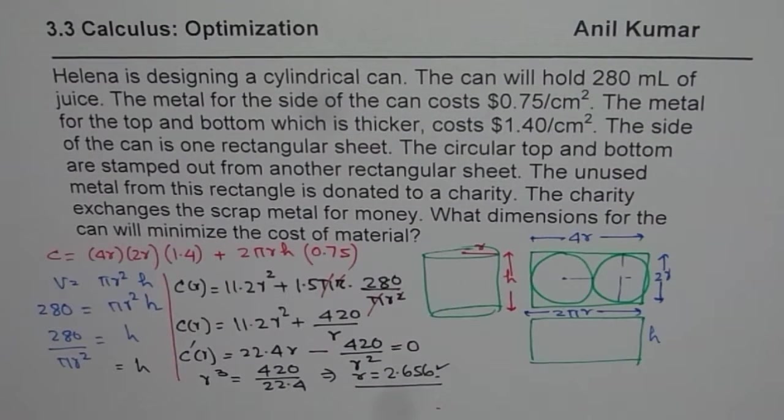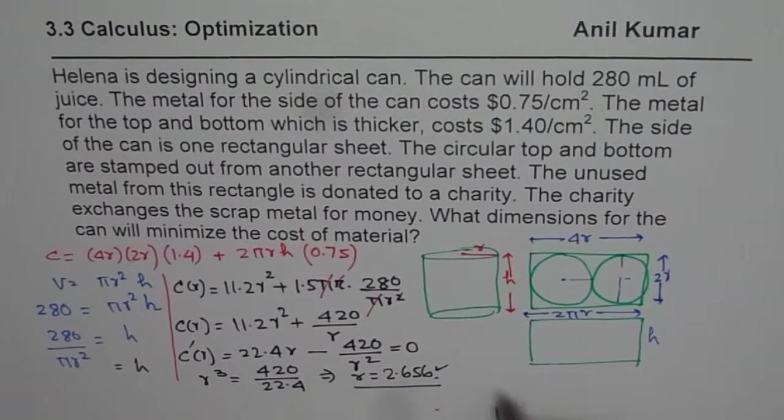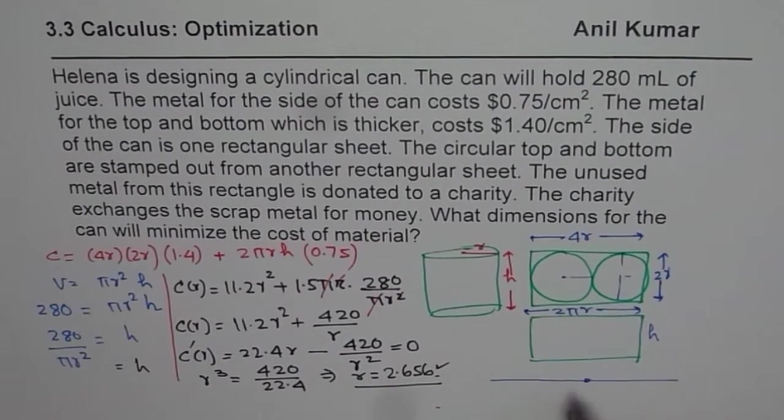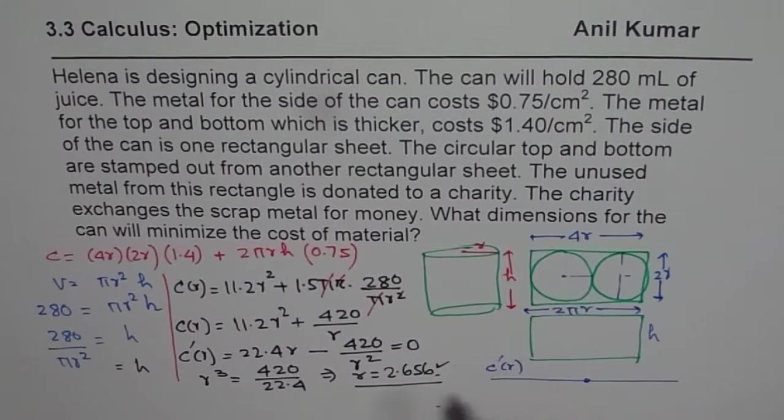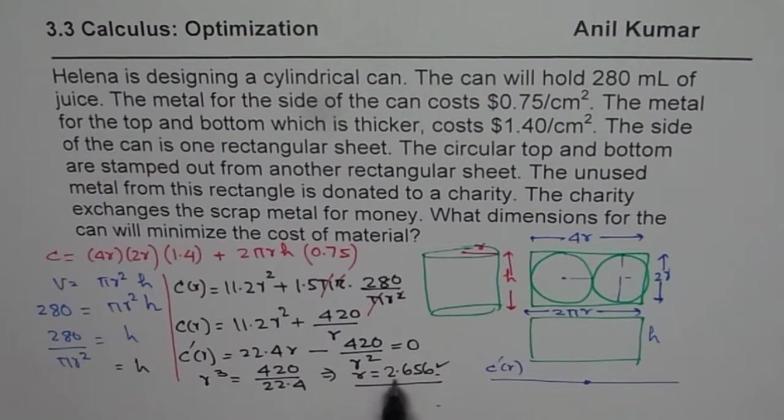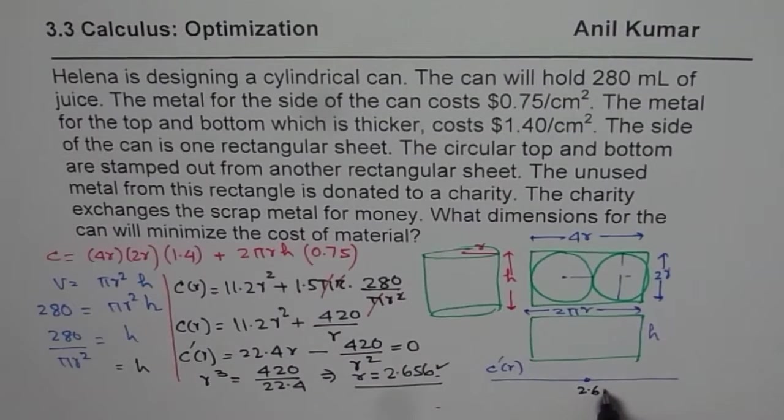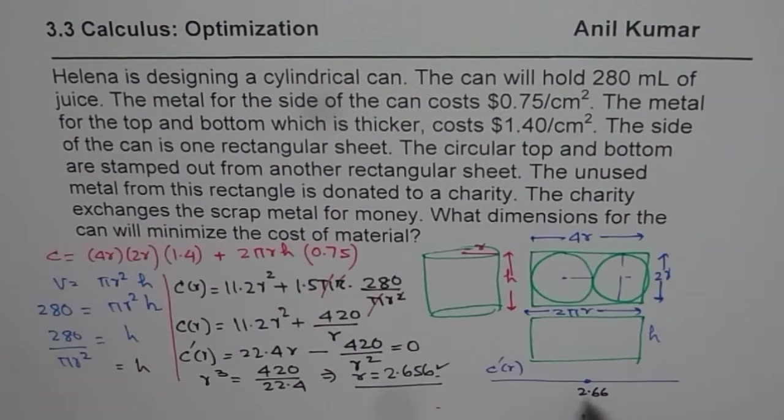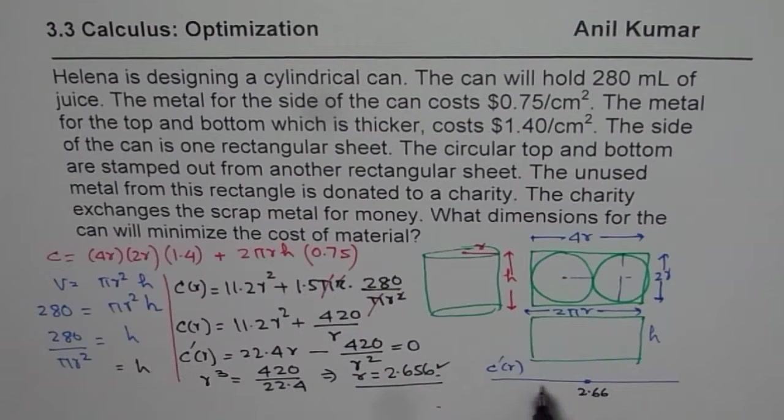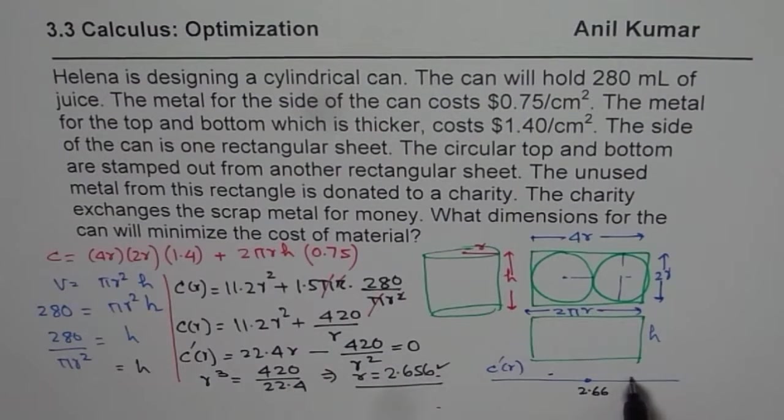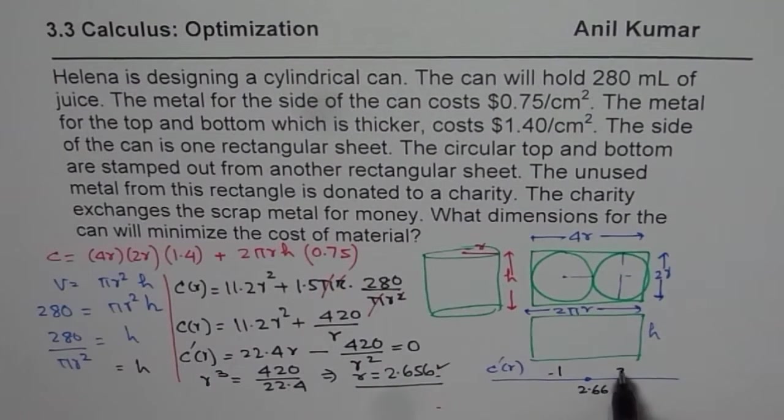Second thing what you should do is, you should also test C of R. Add values before and after 2.6. So take a value, which is, this is 2 points, let us say 6, 6 for us. Now take a test value on the left side, and on the right side. Let us say you take 1 here and 3 here.